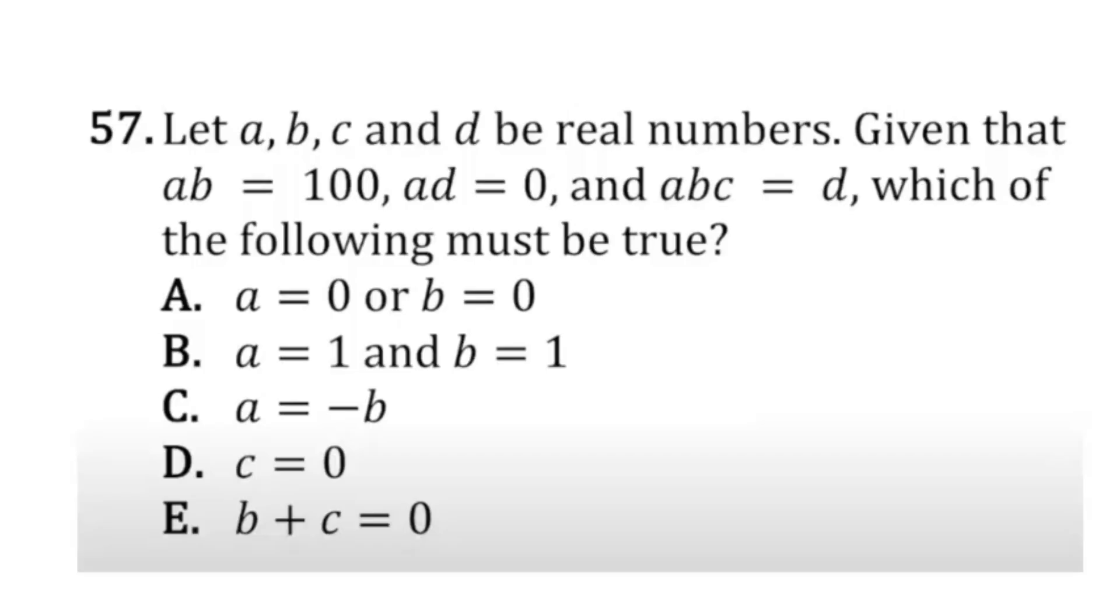Let a, b, c, and d be real numbers given that ab equals 100, ad equals 0, and abc equals d. Which of the following must be true? A says a equals 0 or b equals 0. Well, we can see here that ab is equivalent to 100, and so if either a or b was 0, you'd get a final product of 0 instead of 100, so it can't be A.